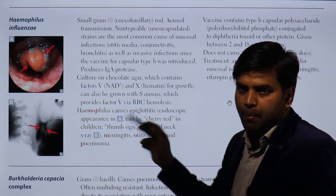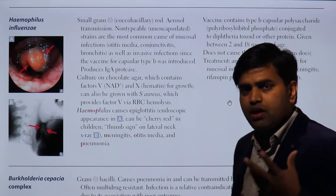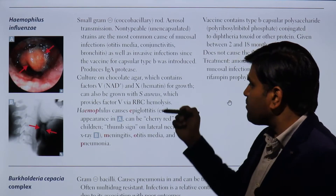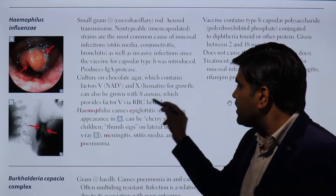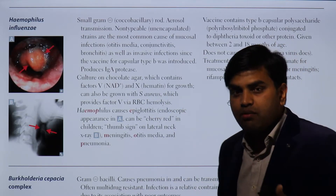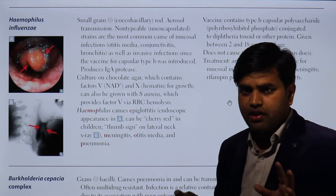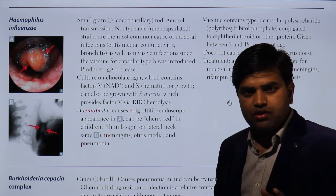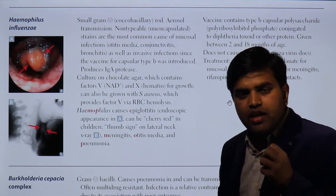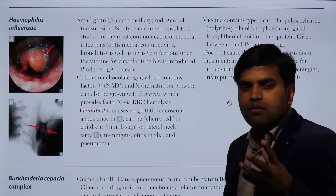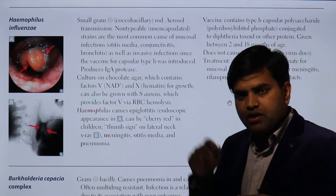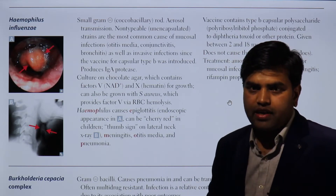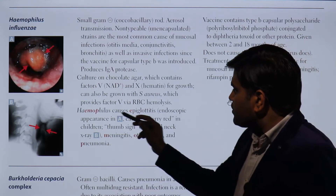On blood agar, the RBCs can be lysed by Staphylococcus aureus, which is a beta-hemolytic organism. Beta-hemolytic organisms like Streptococcus pyogenes, Streptococcus agalactiae, and Staphylococcus aureus completely lyse the RBCs, releasing the NAD (V factor). Therefore, in the presence of Staphylococcus aureus, Haemophilus influenzae can also be grown on blood agar.